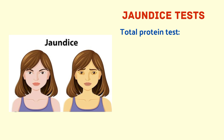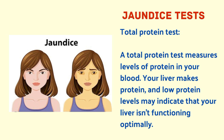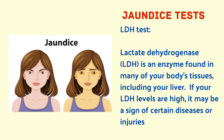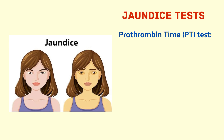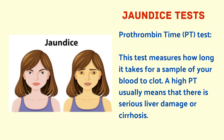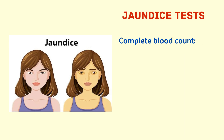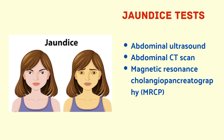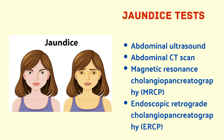Common liver function tests include liver enzyme tests — alkaline phosphatase (ALP), alanine transaminase (ALT), aspartate aminotransferase (AST), and gamma-glutamyl transferase (GGT) — which are elevated when there is liver injury. A total protein test measures protein levels in blood; low levels may indicate suboptimal liver function. LDH (lactate dehydrogenase) test may indicate liver disease or injury if elevated. The prothrombin time test measures how long blood takes to clot; a high PT usually indicates serious liver damage or cirrhosis. A complete blood count checks red and white blood cells and platelets.